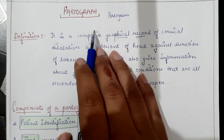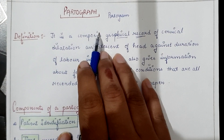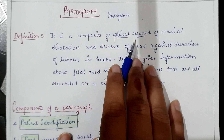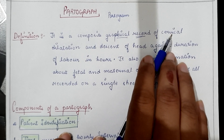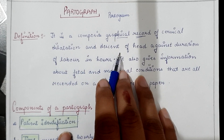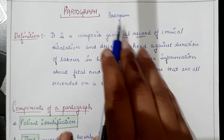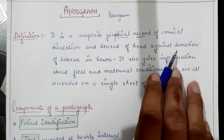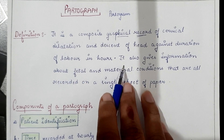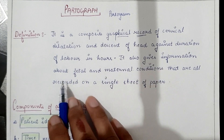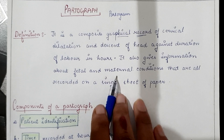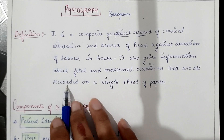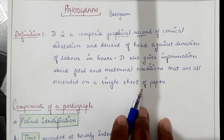Its definition: it is a composite — meaning it consists of several parts — geographical record of cervical dilatation and the descent of the head, that is the downward movement of the head, against the duration of labor in hours. It also gives information about fetal and maternal conditions, all recorded on a single sheet of paper.